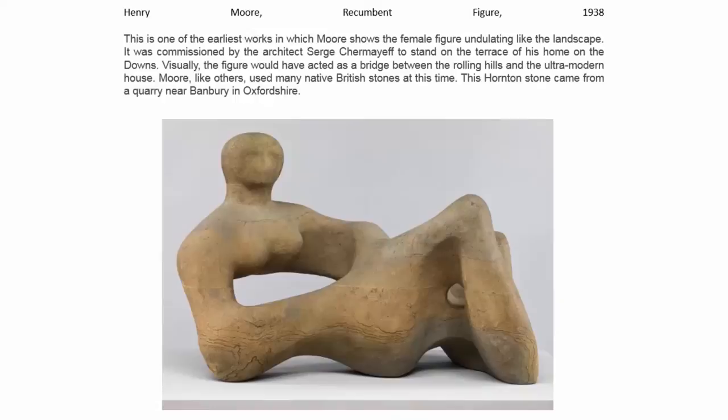Some British sculpture: Henry Moore's Recumbent Figure — modernist sculpture. This is obviously a female figure, made from native stone for the house where it was located, so it's a site-specific sculpture originally made for a certain location from nearby materials.